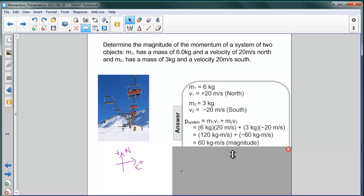That's the magnitude. That's how big it is. But notice that the sign is positive. The 120 is greater than the negative 60, so the direction here is going to be to the north.